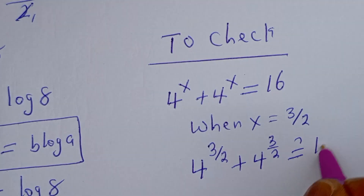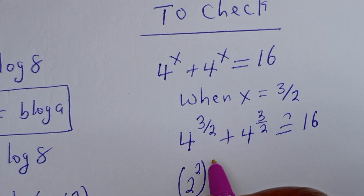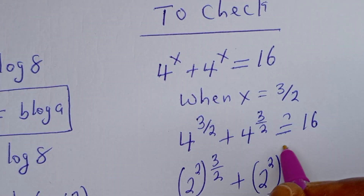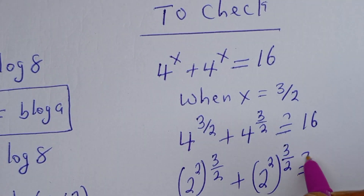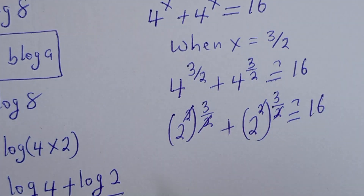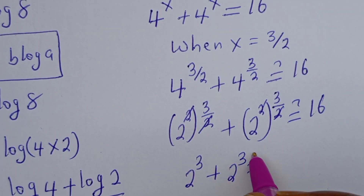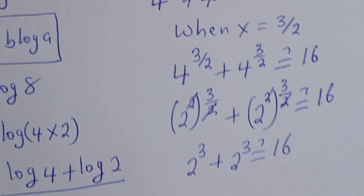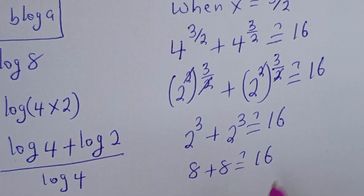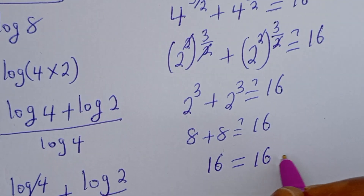This must be equal to 16. Now 4 can be written as 2 squared, so we get 2 squared to the power of 3 over 2 plus 2 squared to the power of 3 over 2. The exponents multiply: 2 to the power of 3 plus 2 to the power of 3. That is 8 plus 8, which equals 16. This is true, confirming our answer.